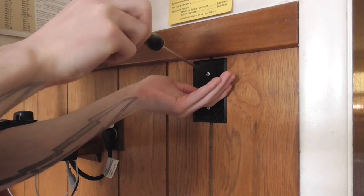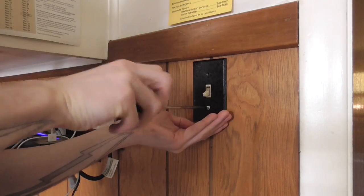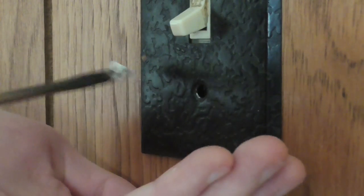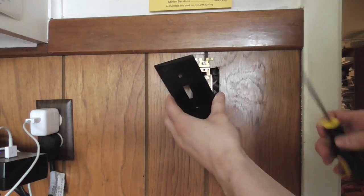You can start by unscrewing the faceplate of your light switch. Make sure to put the screws somewhere where you won't lose them. Once the screws are out, remove the faceplate.